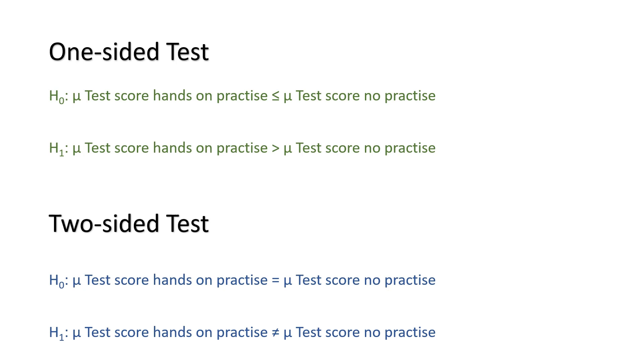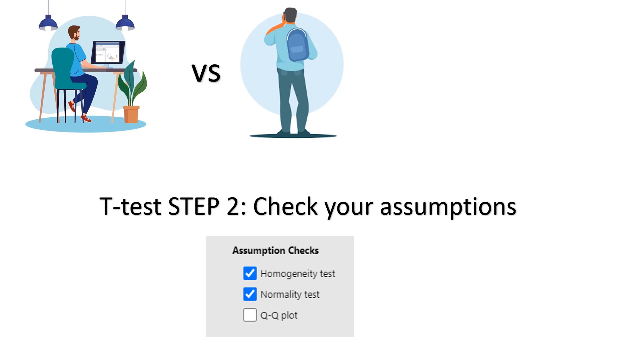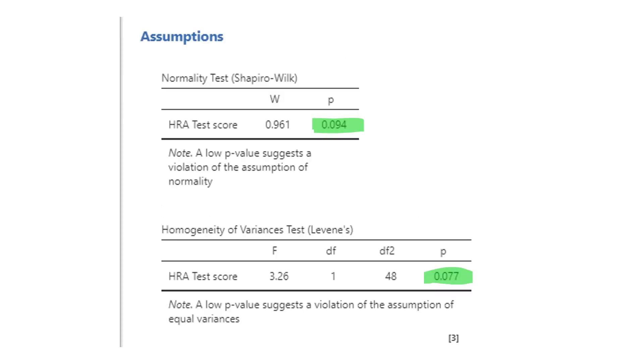So, step one, set your hypothesis and make sure you know whether you're doing a one-sided or a two-sided test. I am choosing to do a one-sided test. Step two, check your assumptions. Let's tick those boxes in Jamovi and check the resulting p-values.